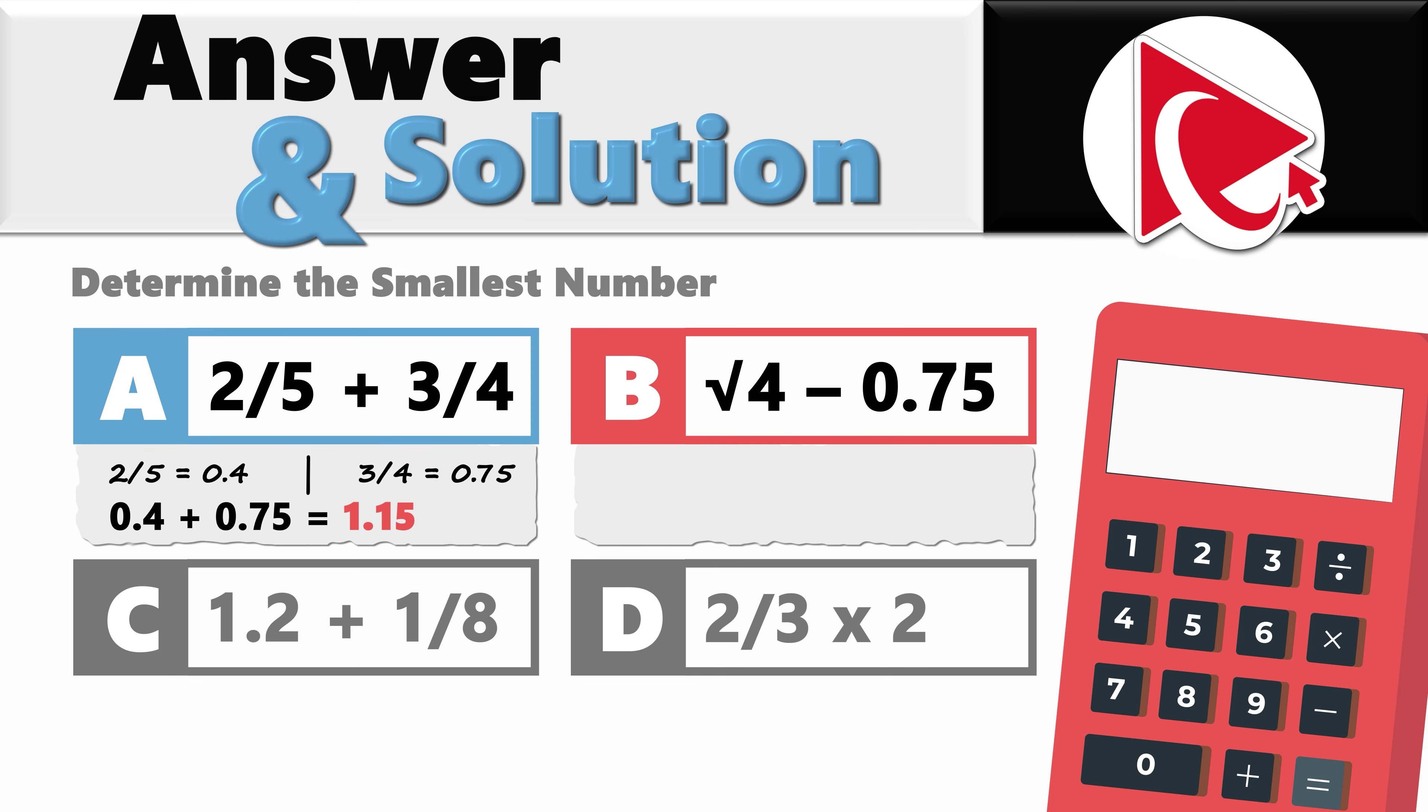Now let's look at expression B: square root of 4 minus 0.75. Square root of 4 is 2. 2 minus 0.75 equals 1.25.